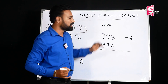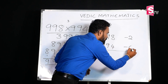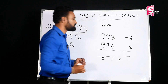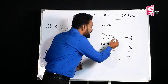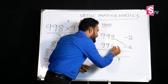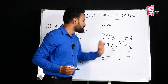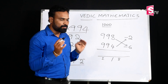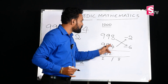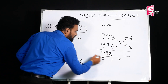The answer has two parts: first part and second part. For the first part, we use cross subtraction. In 998, the base deviation is minus 2; in 994, the base deviation is minus 6. So 998 minus 6 equals 992, and 994 minus 2 also equals 992. Both give the same answer — 992. That is the first part.